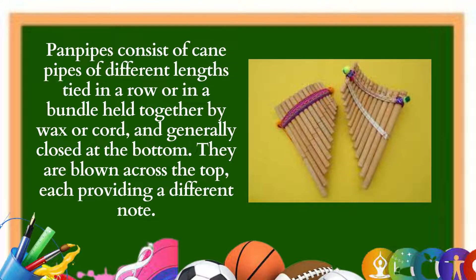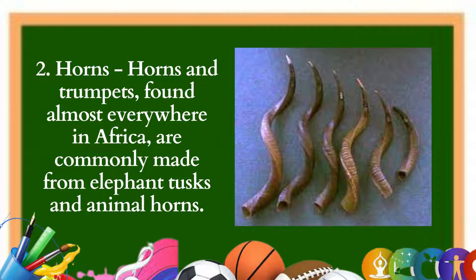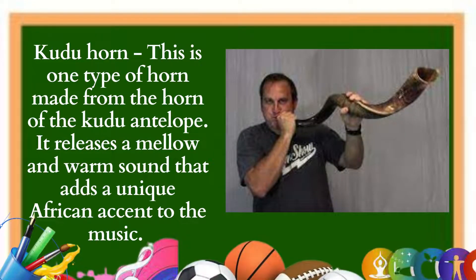2. Horns: Horns and trumpets, found almost everywhere in Africa, are commonly made from elephant tusks and animal horns. These instruments are end blown or side blown and range in size from the small signal whistle of the southern cattle herders to the large ivory horns of the tribal chiefs. One trumpet variety — the wooden trumpet — may be simple or artistically carved, sometimes resembling a crocodile's head. The kudu horn is made from the horn of the kudu antelope and releases a mellow, warm sound that adds a unique African accent to the music.